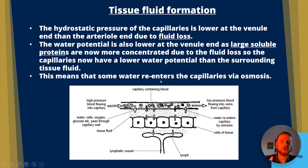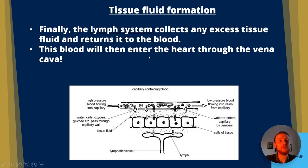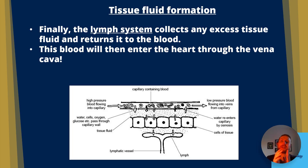Water therefore re-enters the capillaries via osmosis — worth restating as it picks up valuable marks in the exam. Finally, the lymph system collects any excess tissue fluid and returns it to the blood; the blood re-enters the heart through the vena cava. This is the source of the deoxygenated blood that flows up to the right atrium.